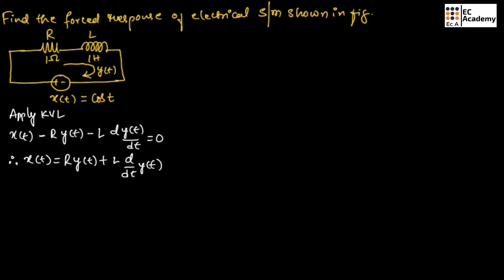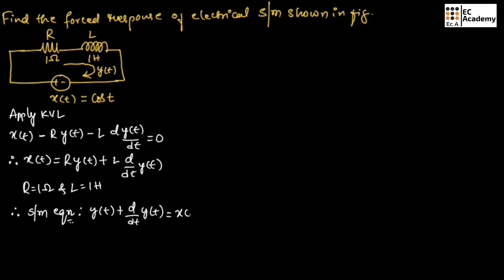In the problem, they have given R is equal to 1 ohm and L is equal to 1 henry. Therefore, we can write the system equation as y(t) plus d/dt·y(t) is equal to x(t). The forced response can be given as yf(t) is equal to yh(t) plus yp(t).